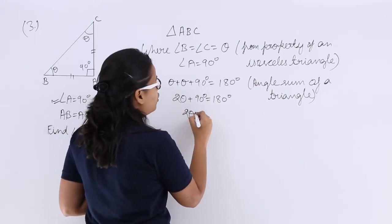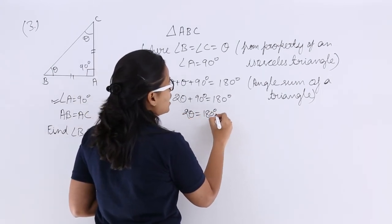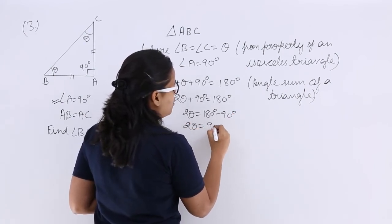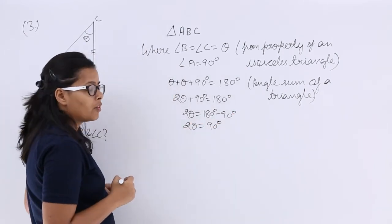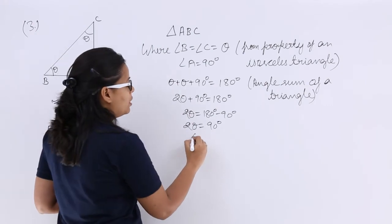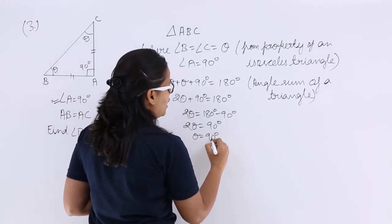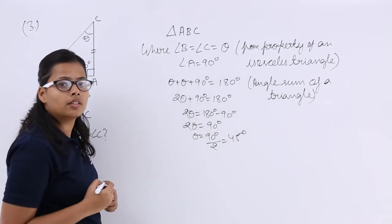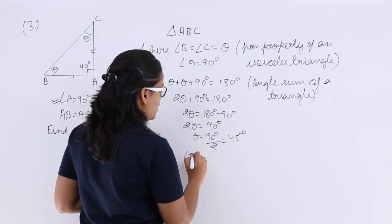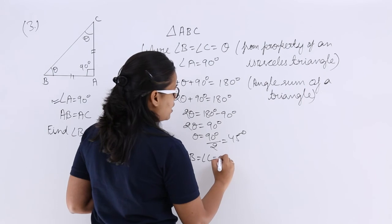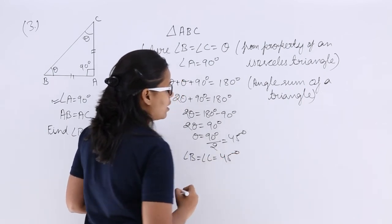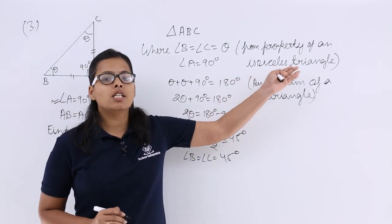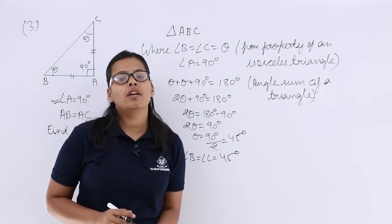So the value for 2 theta will be 180 degrees minus 90 degrees, which gives 90 degrees. Therefore, theta equals 90 degrees divided by 2, which equals 45 degrees. So the values for angle B and angle C are both 45 degrees, since both angles are equal from the isosceles property of a triangle.